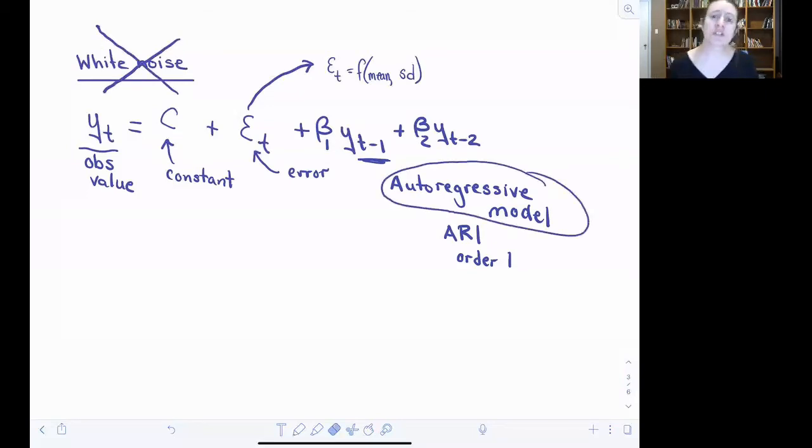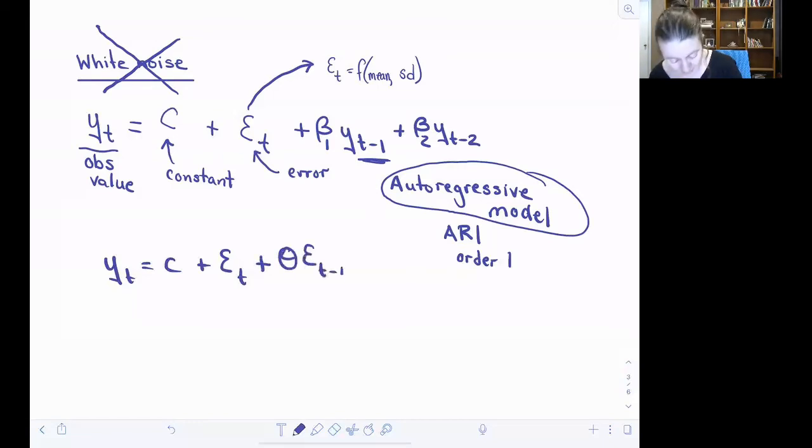Now let's turn a white noise model into a moving average model. So we'll start with that core equation that came to us through white noise. And now what we're going to do is we're going to add that influence of the error from previous time steps to create a moving average model. And we'll do this by adding another coefficient times the error at t minus 1.